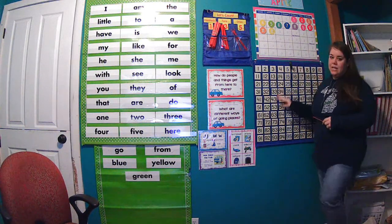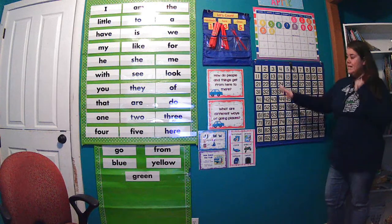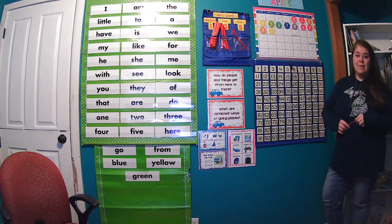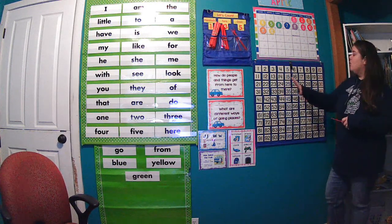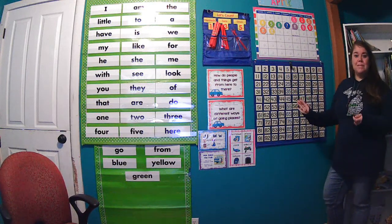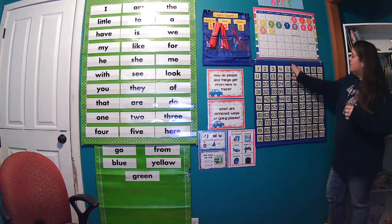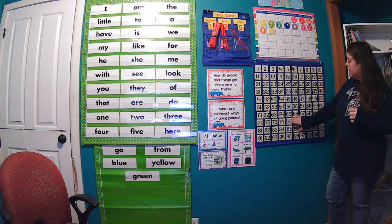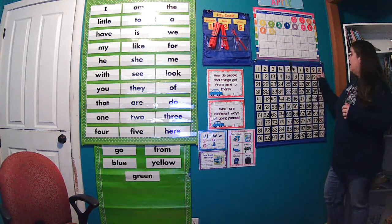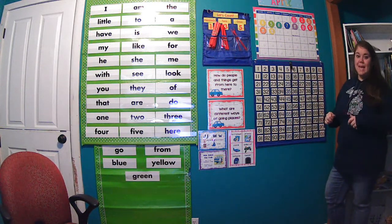Let's take a look at our hundreds chart today. You'll notice I took down our 10 frames and I took down our tally marks, and we're going to use our hundreds chart to help us count by fives and tens. We've changed the color of our fives and our tens to help us count better.